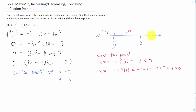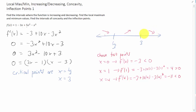Let's choose one more test point from the interval to the right of x equals three. I'll choose x equals four. I'm getting that this is negative eleven, and that is less than zero — a negative number. So we know that our function is decreasing on the entire interval from three to infinity.